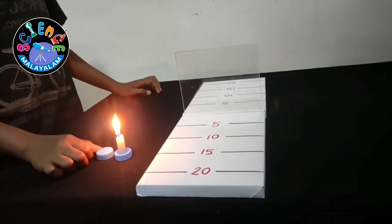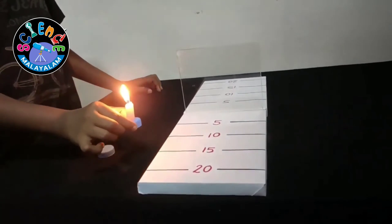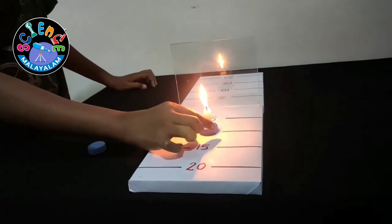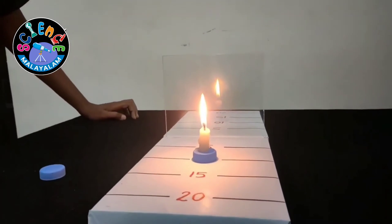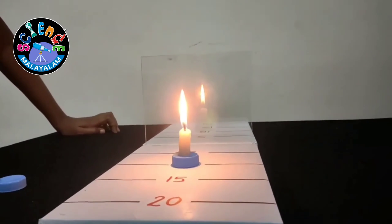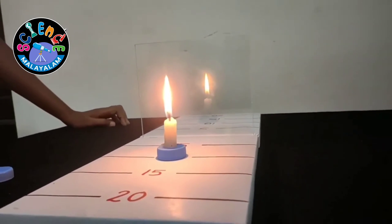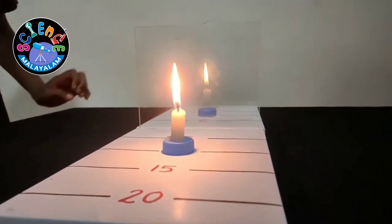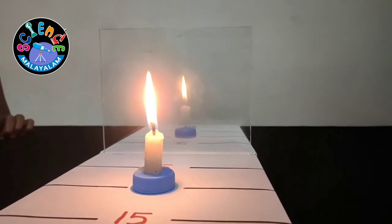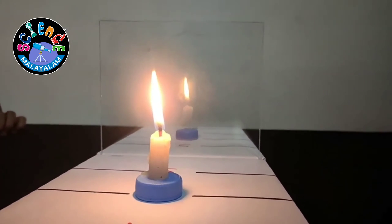Now we are placing a lighted candle at 10 cm distance from the glass. We can observe the image formed at the other side of the glass. We are now placing the bottle cap to measure the distance. We can observe that image is also formed at 10 cm.